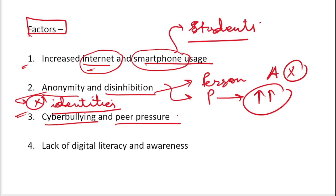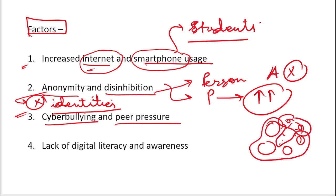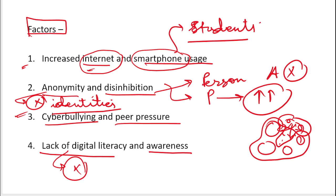Cyberbullying and peer pressure is another factor. For example, in a group of ten students, one or two may pressure others to participate, saying 'do it, do it' — and in that pressure students feel compelled to participate in harmful activities. Additionally, there is a lack of digital literacy and awareness. Students are not fully aware of what can happen from their online actions or how to protect themselves, so they get trapped. This is also a major factor.